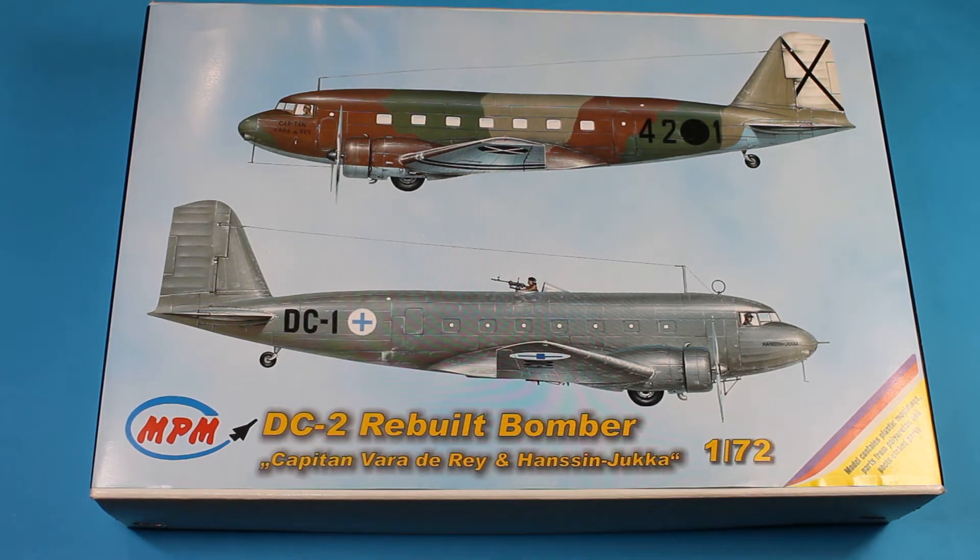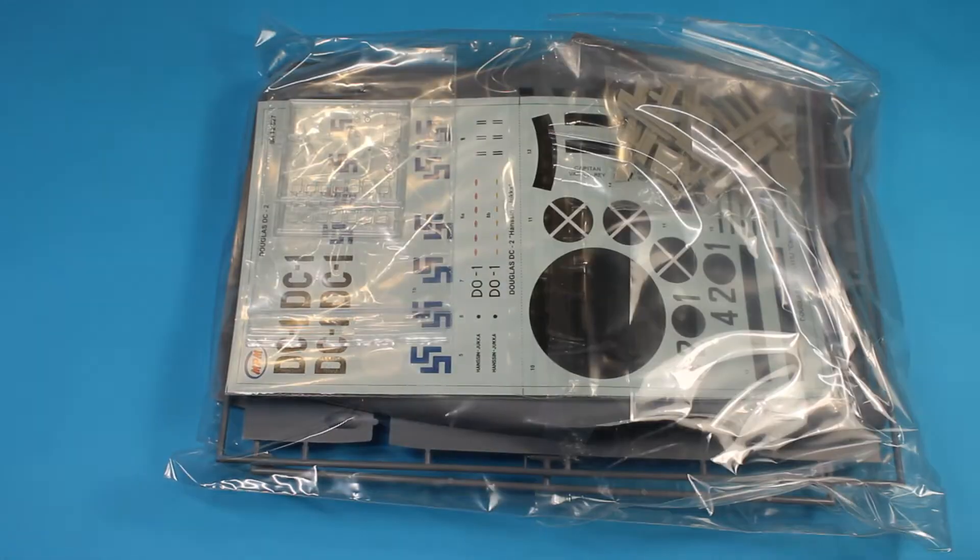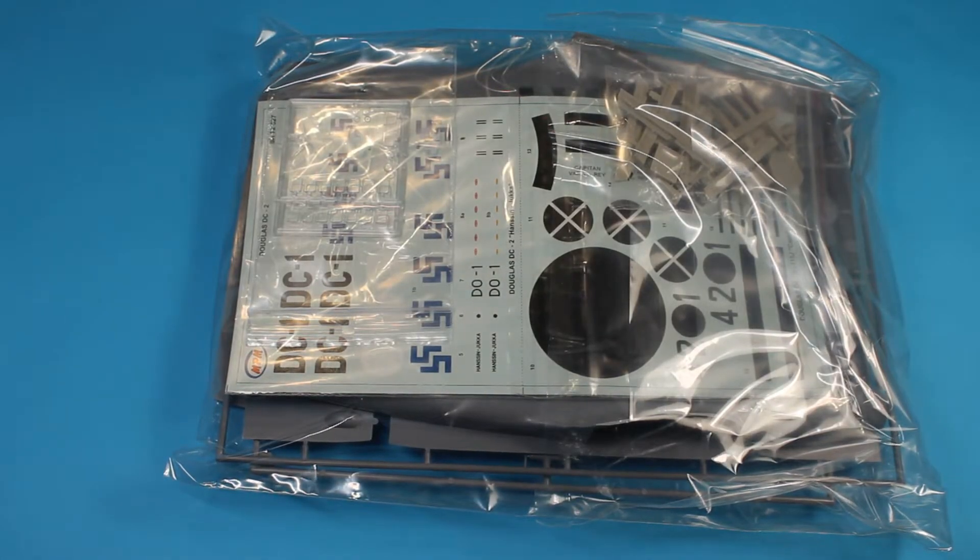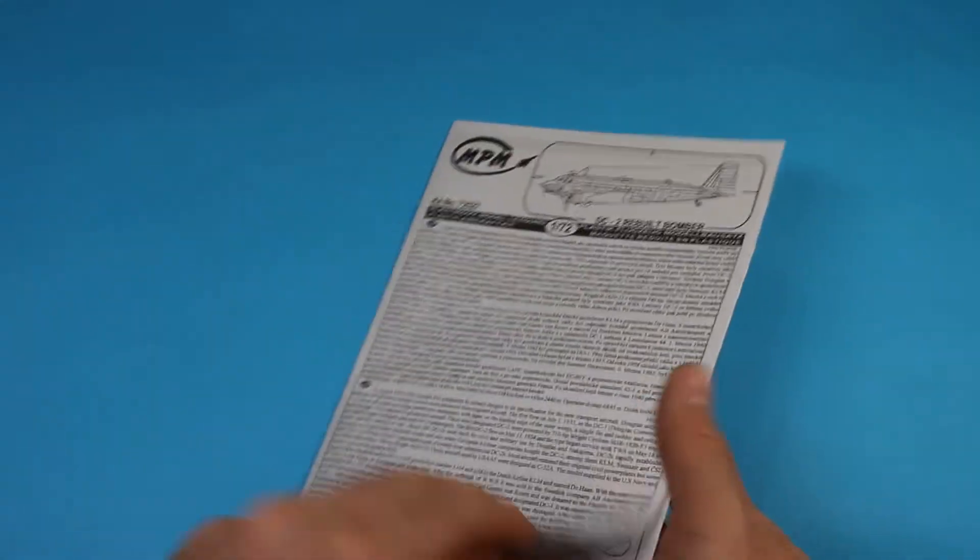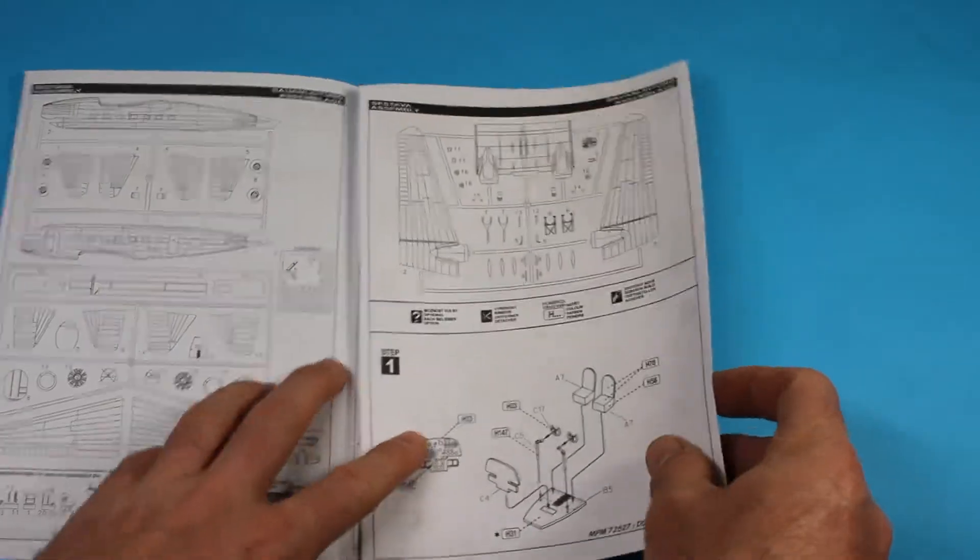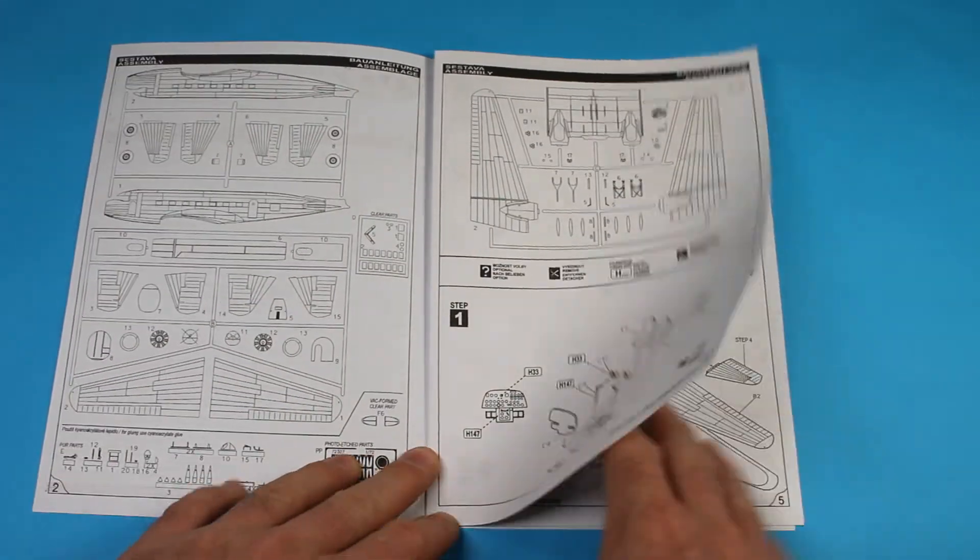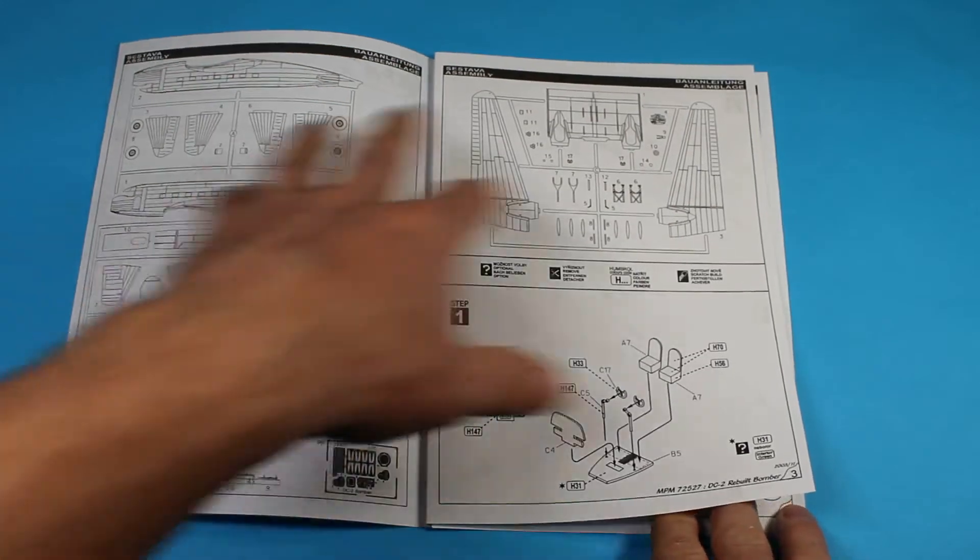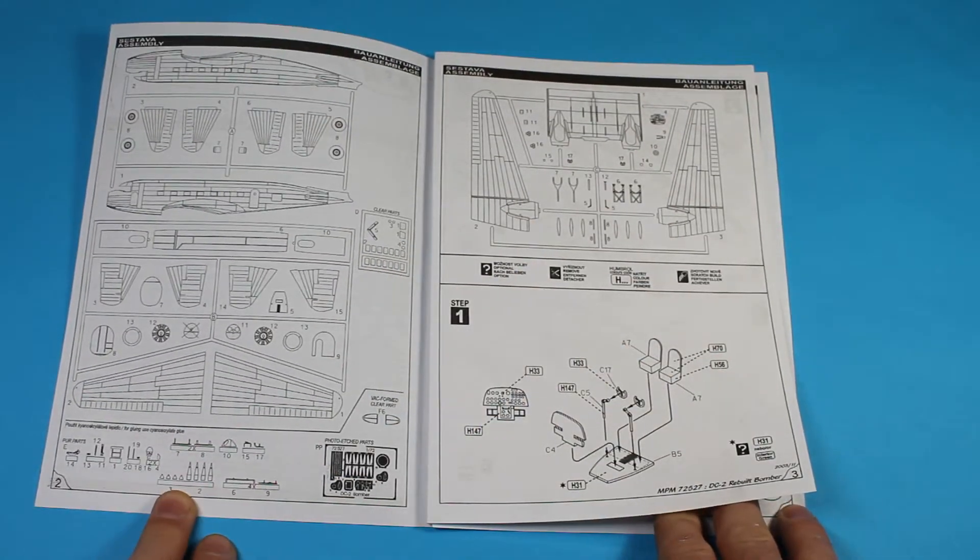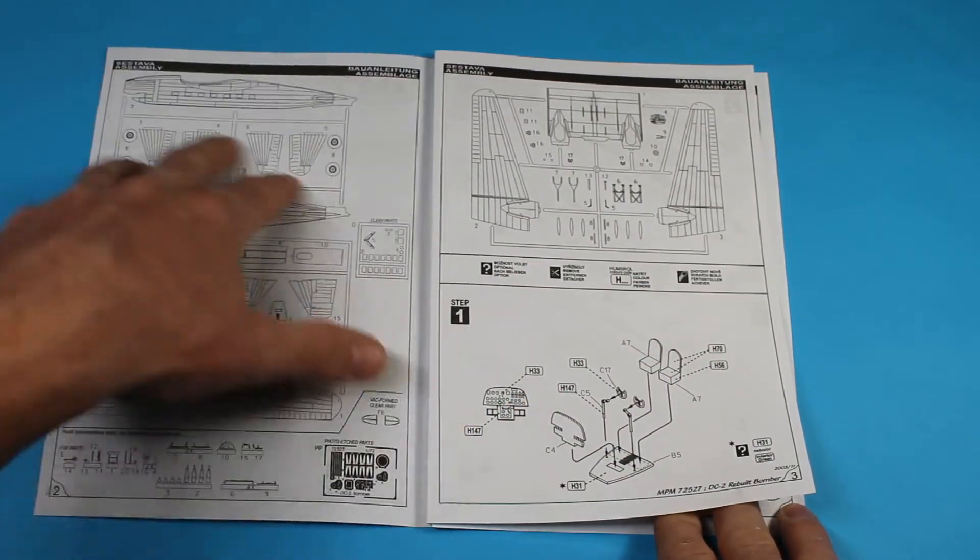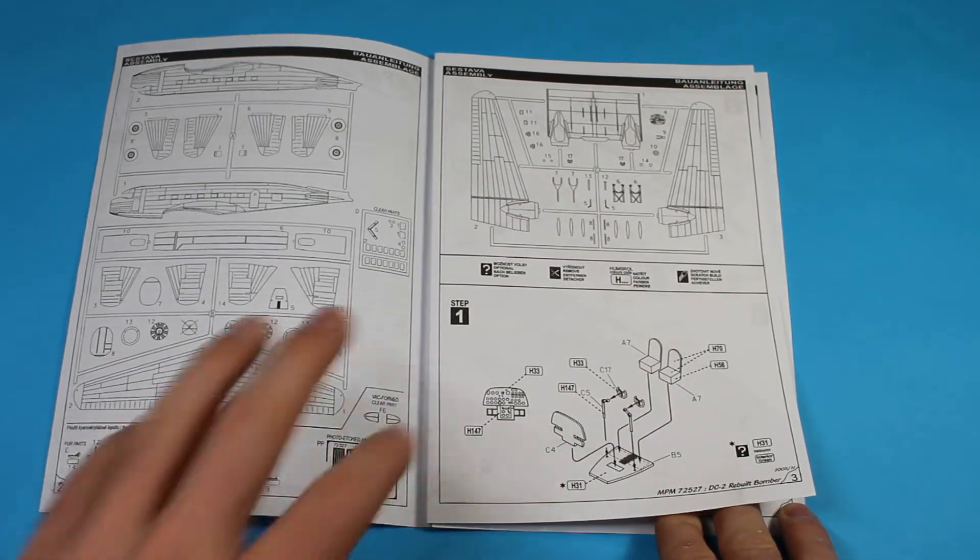Getting into the box, this is pretty much short-run technology here. With that, there's obviously a few things you've got to take for granted, much like Special Hobby and CMK. They're all more or less under the same brand. Here you've got a nice parts layout. We have some resin here and a bit of etched metal, as well as injection molding.